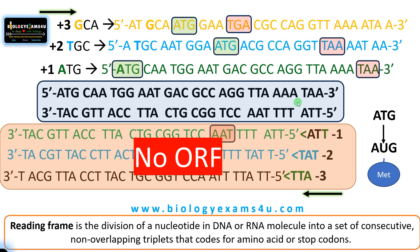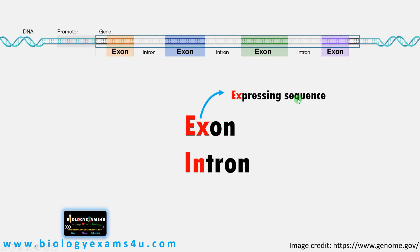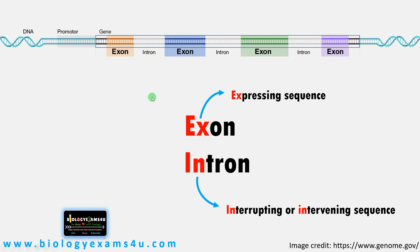In eukaryotes, a gene is made up of exons and introns — it has both coding and non-coding sequences. Exons are the coding or expressed sequences, whereas introns are intervening or interrupting non-coding sequences. Therefore an ORF of a DNA sequence before processing has both coding and non-coding sequences.